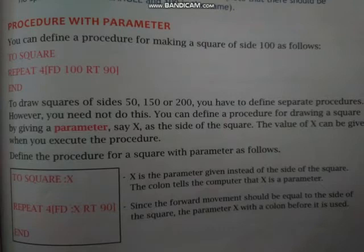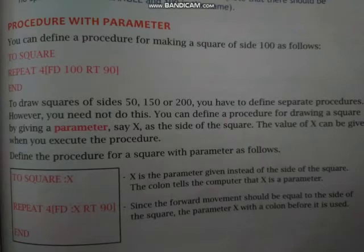Next is procedure with parameter. अब तक जो procedure हमने सीखी, वो सारी without parameters थी — simple procedures. अब हम सीखेंगे procedure with parameter. You can define a procedure for making a square of side 100 as: TO SQUARE, then repeat 4 [FD 100 RT 90], end.